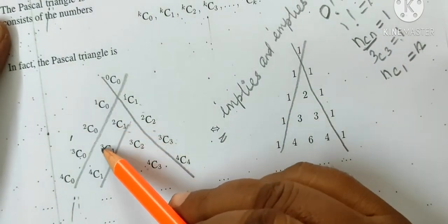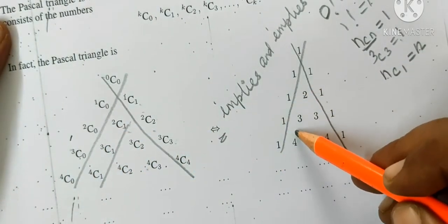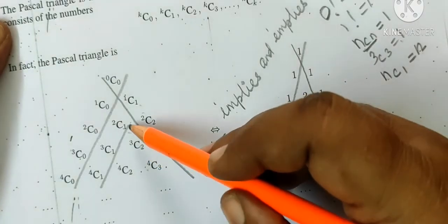The answer is equal to 1, 2, 3, 4. This is equal to 2, 3, 4 on the other side.